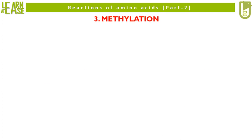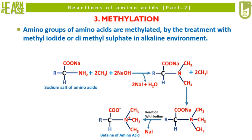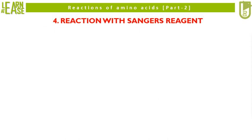The third reaction that I will describe here is methylation. The set of reactions showing methylation of amino acid is shown here. Amino acid is treated with methyl iodide in presence of sodium hydroxide to obtain betaine of amino acid, which is the methylated amino acid. Amino groups of amino acids are methylated by treatment with methyl iodide or dimethyl sulfate in an alkaline environment. The final product is a betaine of amino acid. Carefully see the reaction to understand the mechanics of the reaction.